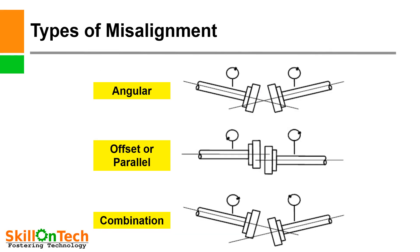Types of misalignment. Here in the first picture you can see angular misalignment — both the axes are at an angle; this is one axis and this is the other axis. This is the angle, so this is angular misalignment. This is offset or parallel misalignment — if your axes are up and down, that is an offset, because the axes are not in the same line.